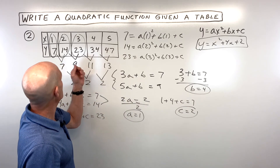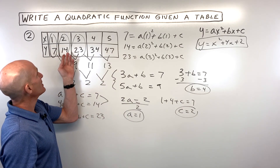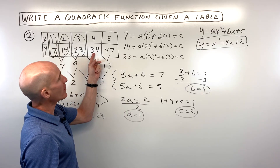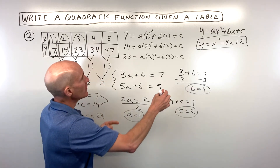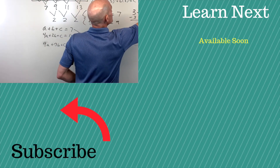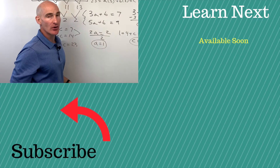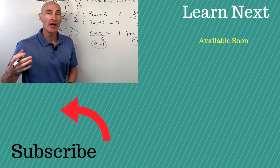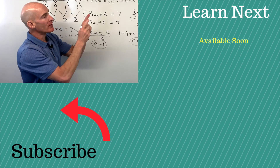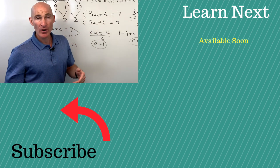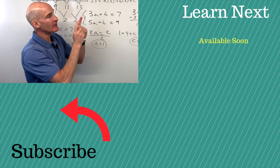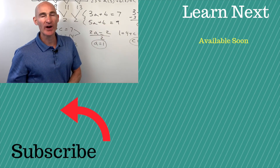Let's check by picking another point. When x is 4, y should be 34: 4 squared is 16, plus 4 times 4 is 16, gives 32, plus 2 is 34. It matches! Great job if you were able to do that problem. I'll put a video right there with additional similar problems if you want more practice — follow me over to that video.